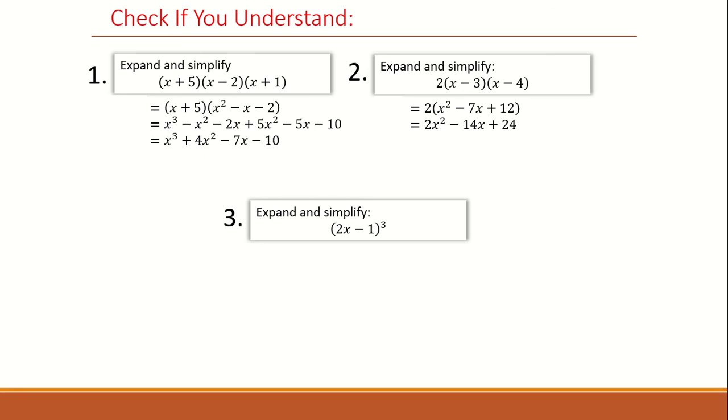Third question, write the statement in three brackets. In this case, 2x minus 1. Expand two of them to get 4x squared minus 4x plus 1. And then multiply the first bracket to get these terms. Simplify each of them to get 8x cubed minus 12x squared plus 6x minus 1.